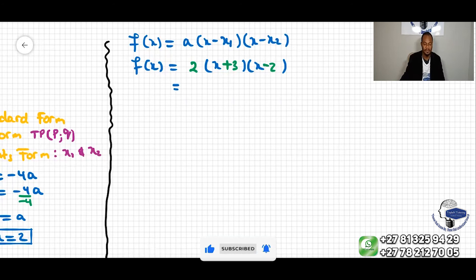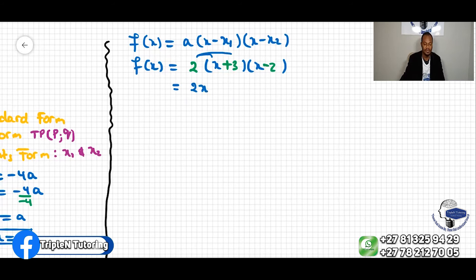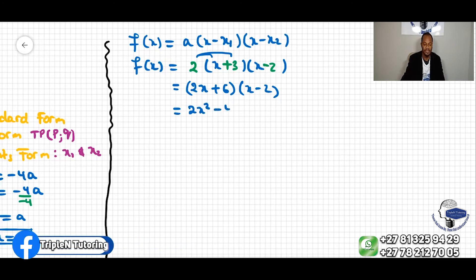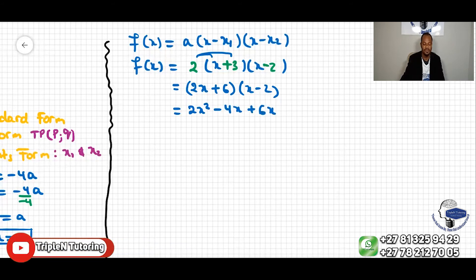This will be 2 times x makes 2x, 2 times 3 makes 6. So we have 2x + 6 times (x - 2). We can still continue. We can do 2x times x, that makes 2x², and then 2x times -2, that makes -4x, and then 6 times x, that makes +6x, and then 6 times -2, that makes -12.